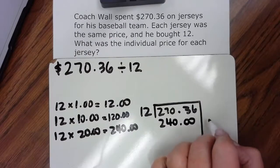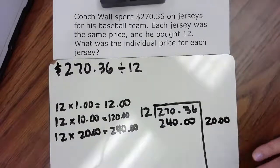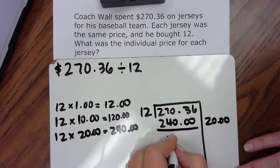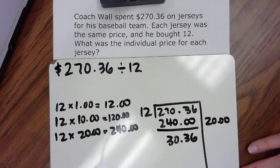So if I say 12 groups of $20, that would be $240, and that would leave me with $30.36. Alright.